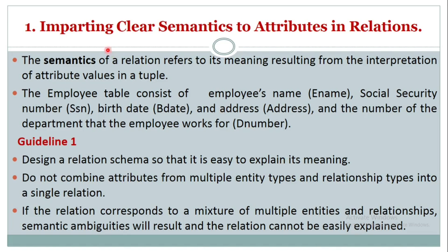The first guideline is imparting clear semantics to attributes in relations. The semantics of a relation refers to its meaning resulting from the interpretation of attribute values in a tuple. For example, the employee table consists of E-name (employee name), SSN (social security number), B-date (birth date), address, and D-number — the department number where the employee works.